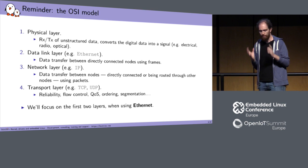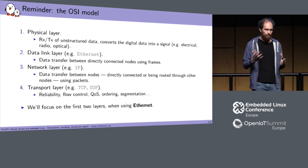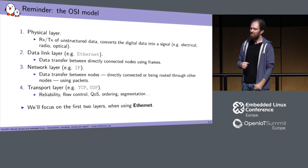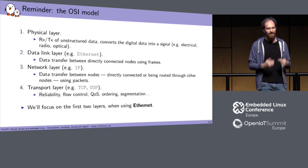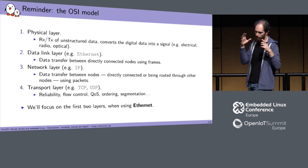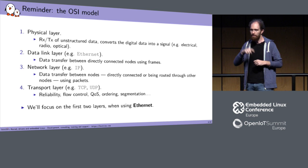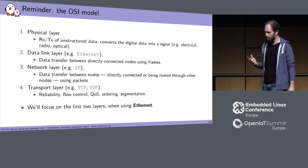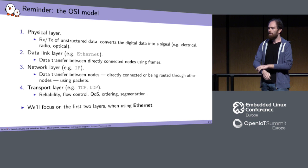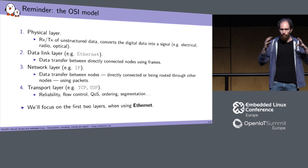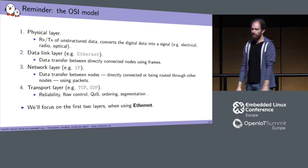On top of the data link layer you have the network layer, such as IP. If you're only using the data link layer, you can only connect two directly connected devices. But if you want to connect more than two devices and send data to very remote devices hopping through routers, you need the network layer. The main idea with the network layer is to route data through many machines up to the destination, using what are called packets.